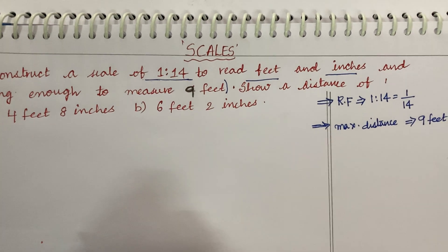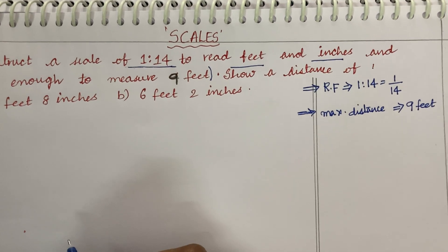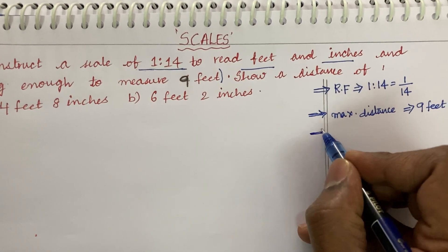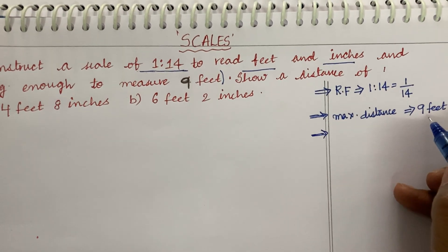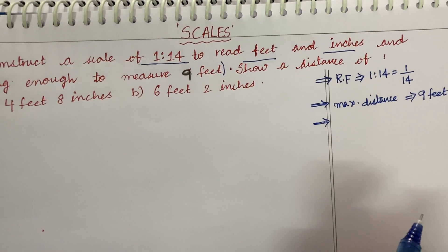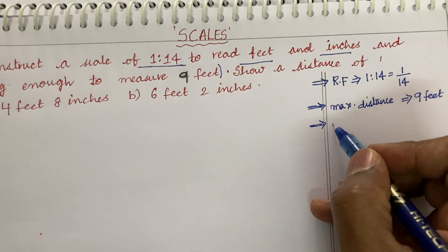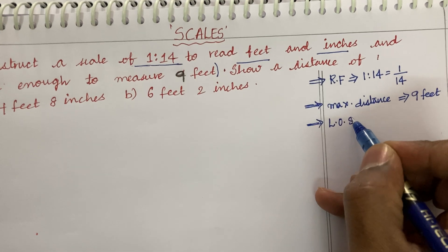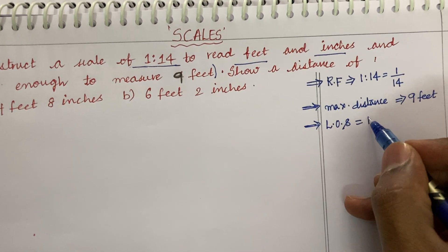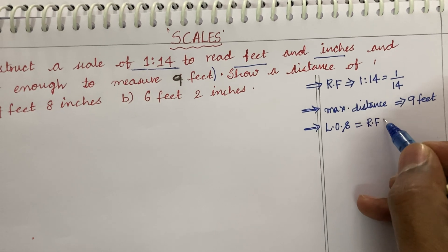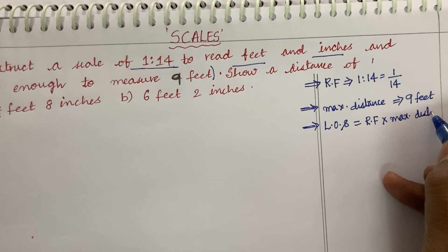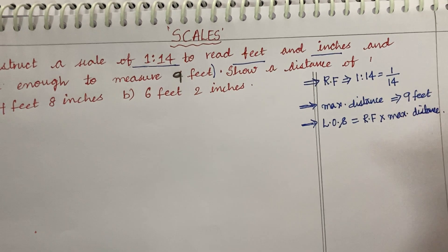The problem is given in feet here, so please concentrate on that. As I told you, we need to work out the length of the scale. I cannot draw a 9-feet line on my drawing sheet. What we are supposed to do is work out the length of the scale, which is given as RF into the maximum distance.